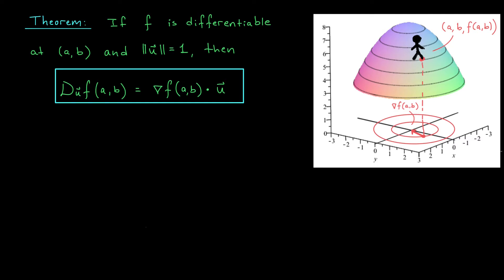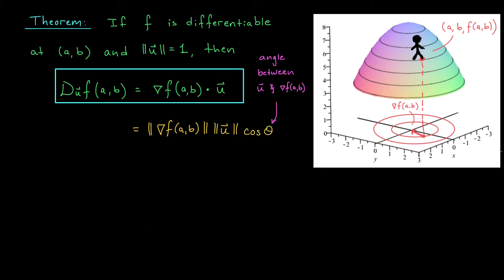In addition to being a quick way to compute directional derivatives, this result helps us understand some fundamental properties of the gradient vector. I'm going to use our dot product formula from linear algebra to express the right-hand side as the norm of the gradient times the norm of u times cos θ, where θ is the angle between the gradient and our direction vector. Since u is a unit vector, its norm equals one, so the right-hand side is simply the norm of the gradient times cos θ. The gradient at (a,b) is fixed — it doesn't change. But by changing the angle θ, that is, by changing the direction in which we move from (a,b) relative to the gradient, we'll get different values for our directional derivative. More specifically, it depends on cos θ.